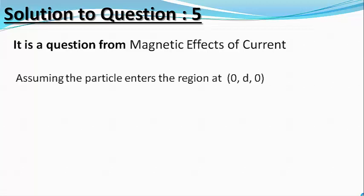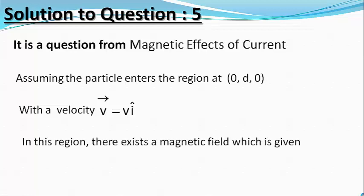Assume the particle enters the region at point A given by 0, d, 0 with velocity v vector equals v i cap. In this region, there exists a uniform magnetic field given by B vector equals B k cap. Since this force is always perpendicular to the velocity vector, it can only change the direction of motion of the particle but cannot change the speed of the particle.